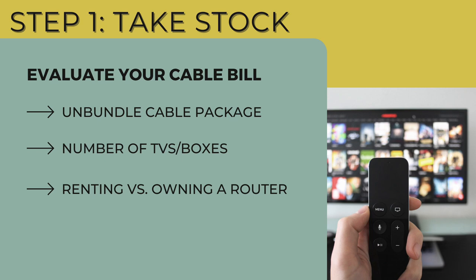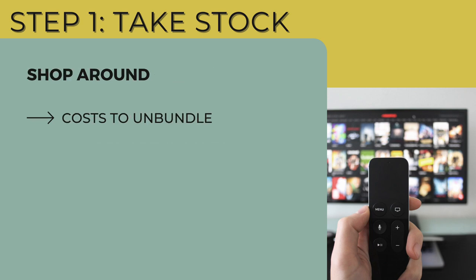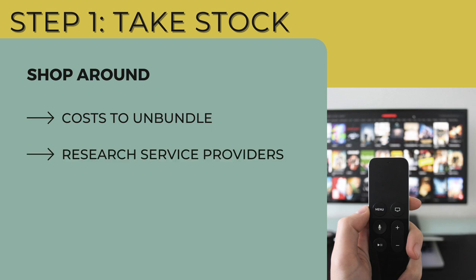You can shop around at other cable and internet service providers available in your area. With your current cable provider, you want to find out what your costs will be if you were to unbundle your cable from internet and just go with internet service and switch to streaming altogether. Be aware of other providers available in your area, assuming you're not locked into a contract that would be too costly to break. Research your local service providers, their monthly cost, and their advertised internet speed.